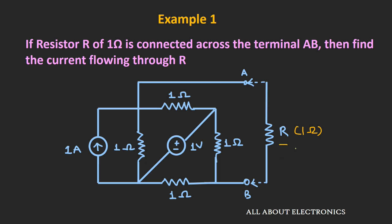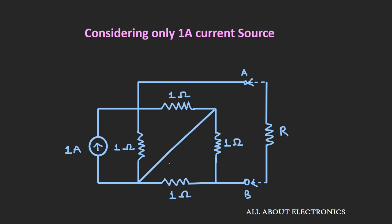First, let us consider only the 1A current source. If we consider only this 1A current source, then the voltage source gets short-circuited. Looking at the equivalent circuit, these two 1-ohm resistors are in parallel, and similarly these other two 1-ohm resistors are also in parallel.